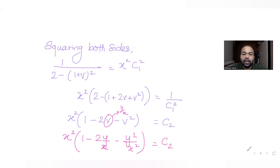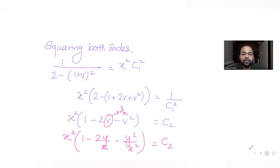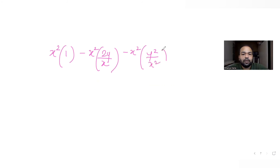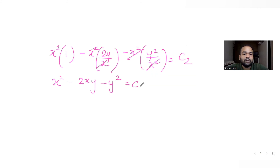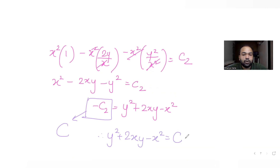Expanding by multiplying x² through: x² minus 2xy minus y² equals C₂. Rearranging, taking everything to one side: y² plus 2xy minus x² equals minus C₂. Since minus C₂ is just another constant of integration, we write it as c. So the final answer is y² plus 2xy minus x² equals c.